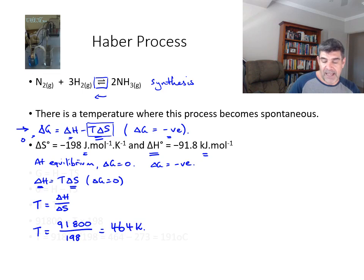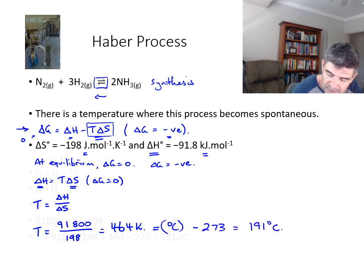That being the case, what I want to do is I then want to work out what that might be in degrees Celsius. So if I want that in degrees Celsius, then what I need to do is subtract 273 and I end up with 191 degrees Celsius. So that's telling me that at that temperature, we have a spontaneous reaction.